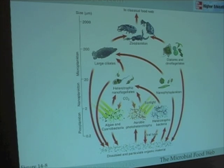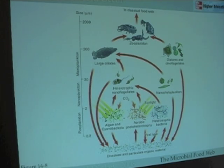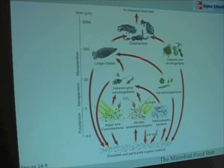Dinoflagellates are what we call mixotrophic because they both eat and photosynthesize. Ciliates, diatoms, and dinoflagellates serve as food for the classical food web. So this microbial loop or microbial food web is also a food source for the classical food web. Sometimes the coupling between the two food webs is very strong, and sometimes it doesn't exist at all or is very weak.